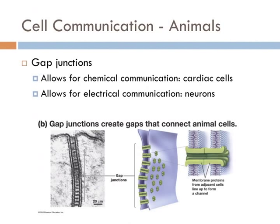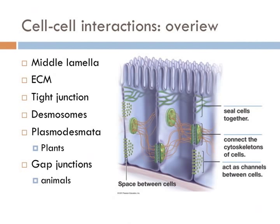Here is an overview of all the cell-to-cell interactions discussed in this lecture. The middle lamella and the extracellular matrix provide structural support and bind adjacent cells together. Tight junctions form watertight barriers between cells, especially important in tissues that are barriers between organs. Desmosomes are proteins that serve as anchoring points locking cells in specific orientations. Plasmodesmata in plants and gap junctions in animals allow adjacent cells to communicate.